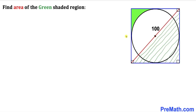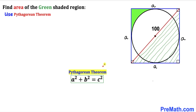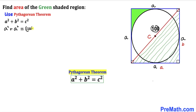We know that we are dealing with a square, which means all sides are going to have the same length. Let me call this length lowercase a. Now let's focus on this shaded triangle — since we are dealing with a right triangle, we are going to use the Pythagorean theorem: a² + b² = c². The diagonal is c, and both legs are a. So we get a² + a² = 100².